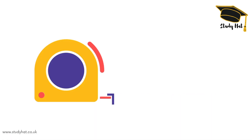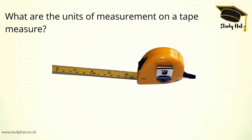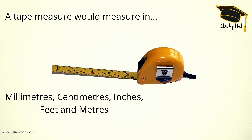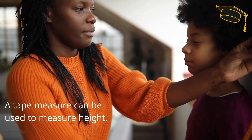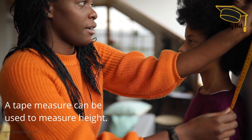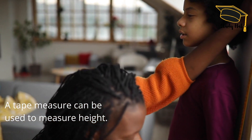So let's think about a tape measure for a moment. What are the units of measurement on a tape measure? Pause the video and see if you can work out the answer. The measurements on a tape measure are millimetres, centimetres, inches, feet, and metres. One example of using a tape measure might be measuring the height of somebody — perhaps your parents have measured your height and seen how much you've grown each year.